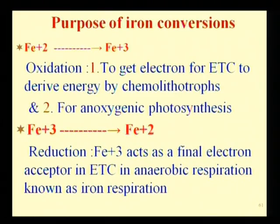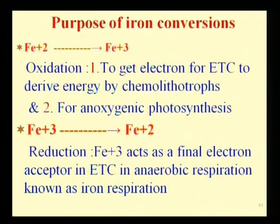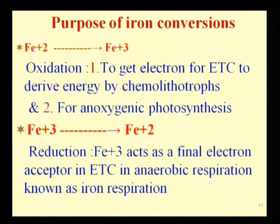The same oxidation reaction is also utilized by photosynthetic organisms to derive electrons. Photosynthetic organisms oxidize Fe²⁺ and derive electrons that continue the photosynthetic cycle. Here there is no generation of oxygen because oxygen is only generated when H2O is the electron donor. Since Fe²⁺ is the donor here, this is anoxygenic photosynthesis.